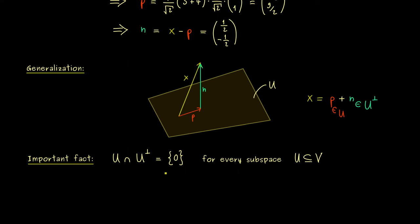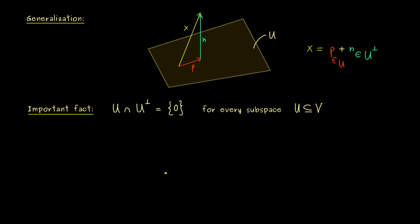Namely, from the property that the inner product is positive definite. Therefore, I think it's not really needed to formulate the explicit proof here. What we should do now is to formulate what we can say in this general case.